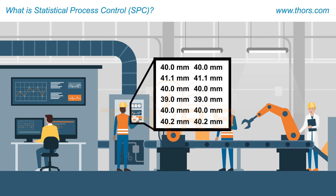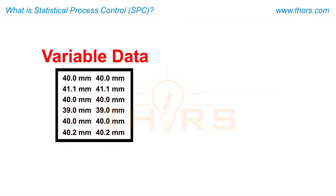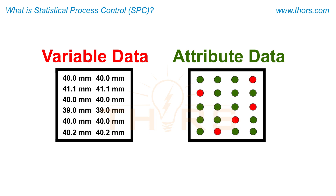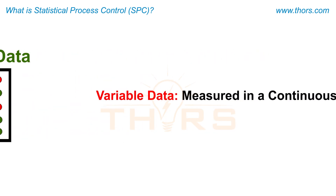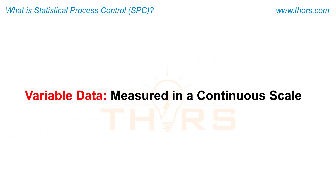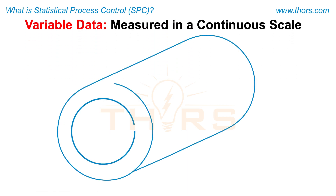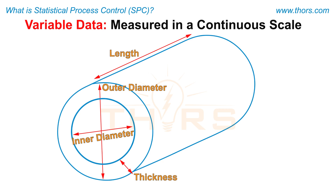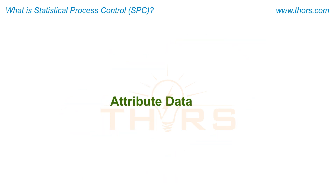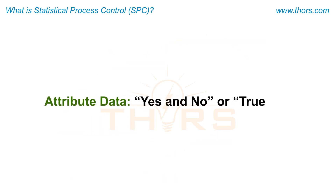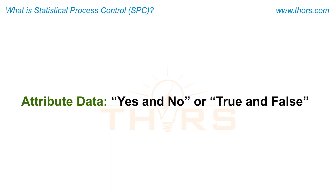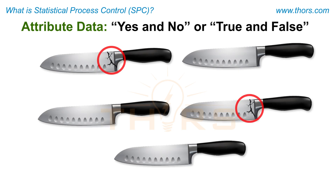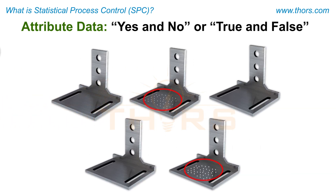The data on quality characteristics are classified broadly as variable data and attribute data. Variable data are defined as a collection of data points that are measured on a continuous scale, such as length, inner diameter, outer diameter, and thickness. Attribute data are defined as a collection of yes-and-no or true-and-false types of information compiled for data analysis.